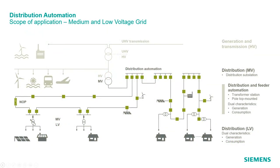The scope of distribution automation is shown here in the medium and low voltage level. The grid follows two fundamental design criteria: on the left side, the cable grid topology, mainly using secondary substations; and on the right side, the overhead line topology, mainly using pole-mounted devices.